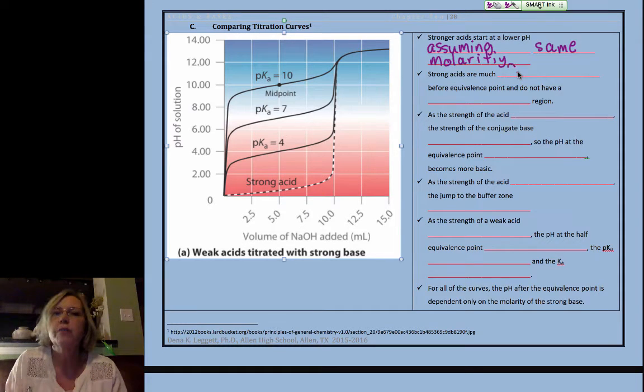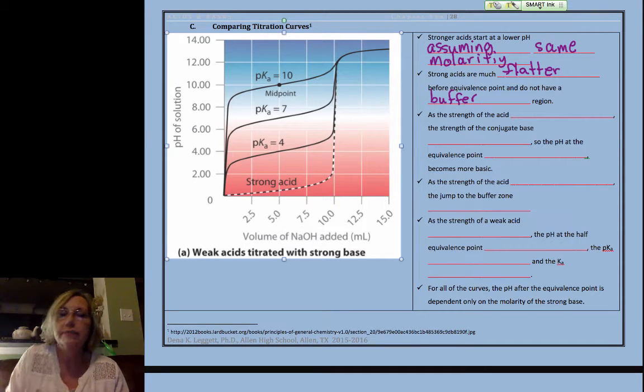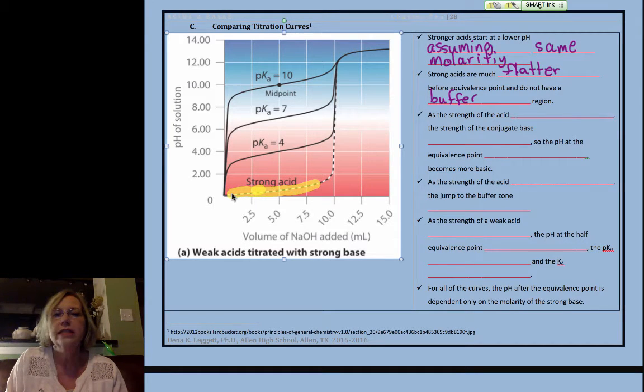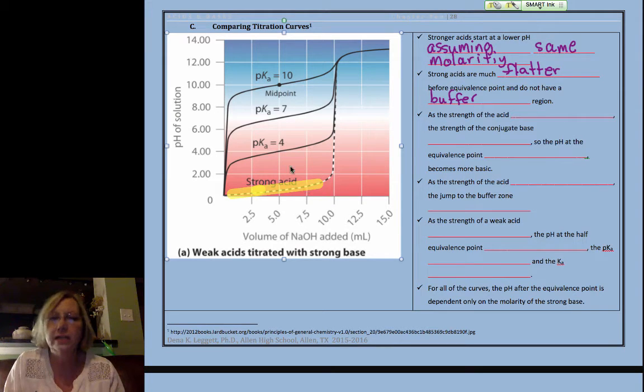Strong acids are much flatter before the equivalence point. They do not have a buffer region. In order to have a buffering system, you have to have a weak acid or a weak base. So you notice it's just kind of flat as you slowly have excess strong acid, and then you go up to excess strong base.